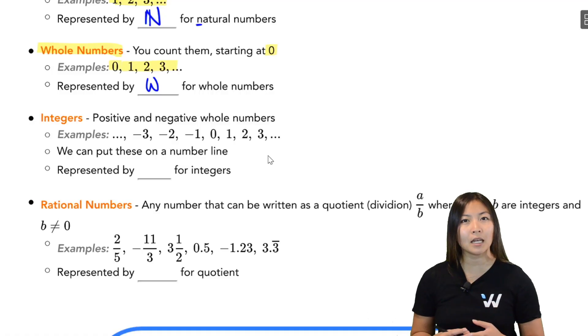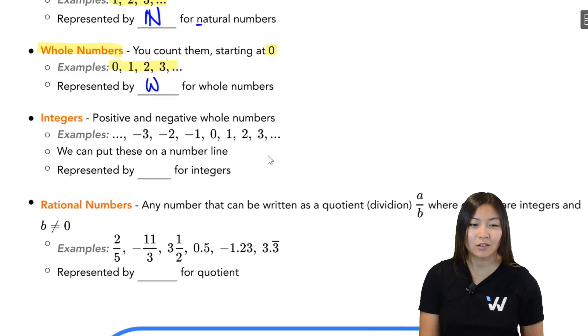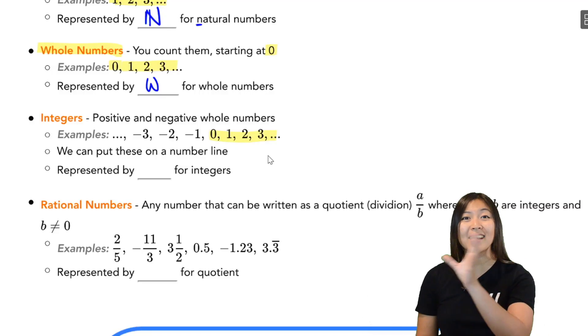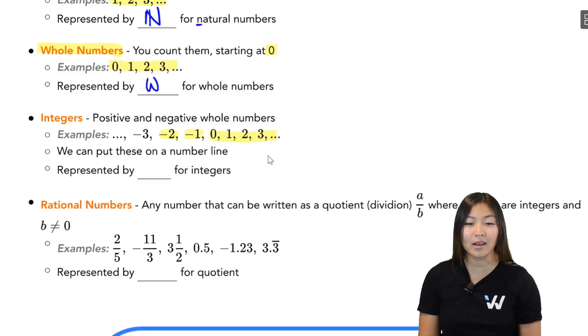But now what if you're talking about money and someone owes you money? Well, all of a sudden we have this idea of negative numbers. So if we go from zero, 1, 2, 3, 4 and so on, take all our whole numbers. But now we add on all of the negative numbers, negative 1, negative 2, negative 3 and so on. We have the set of integers.